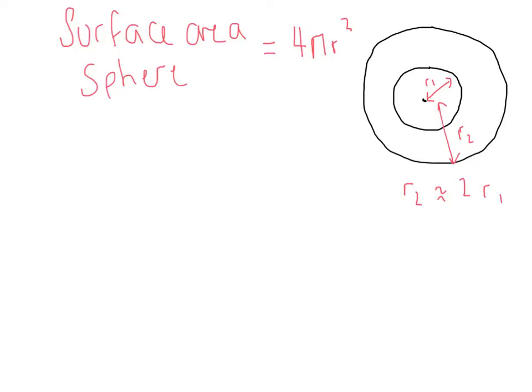So if we know intensity is the number of photons per meter squared, we need to know what the surface area of those spheres is, because then we can work out what the intensity is there.